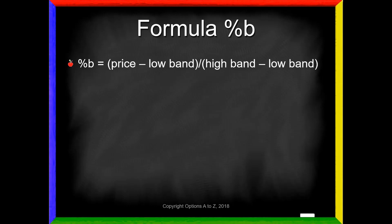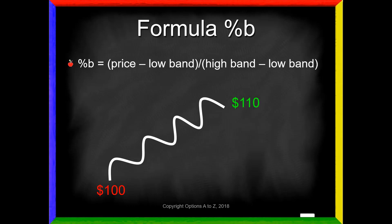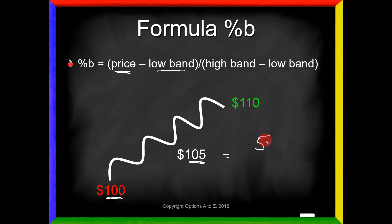Just to clarify with an example: let's say that over the past 20 days the stock had a low of 100 and a high of 110, and right now the current stock price is 105. What is %B going to give us? The formula says take the current stock price, 105, and subtract the low band of 100 — that gives us 5. We divide that by the high band minus the low band: 110 minus 100 is 10. That gives us a reading of 0.5. Any time the current stock price is halfway between those Bollinger Bands, you will see a reading of one half.